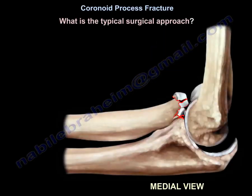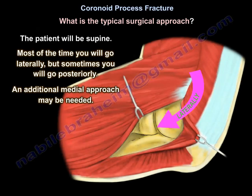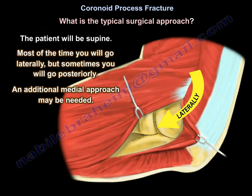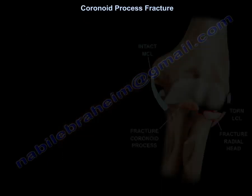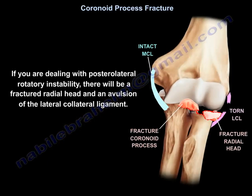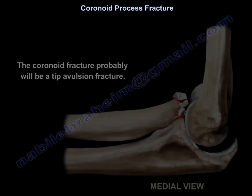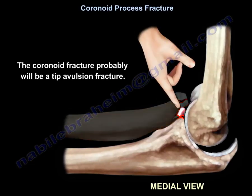What is the typical surgical approach? The patient will be supine. Most of the time you will go laterally, but sometimes you go posteriorly. An additional medial approach may be needed. If you are dealing with posterolateral rotatory instability, there will be a fractured radial head and avulsion of the lateral collateral ligament. The coronoid fracture will probably be a tip avulsion.